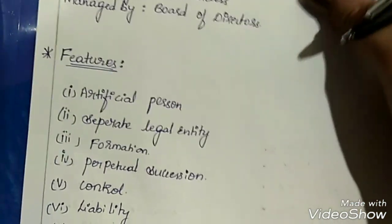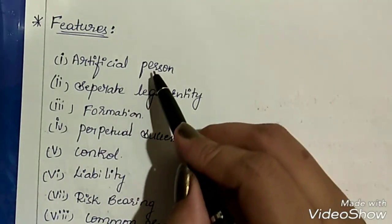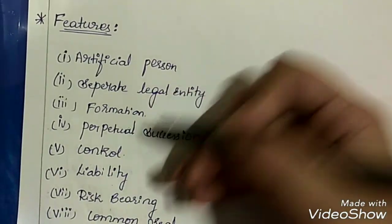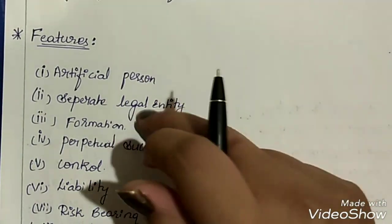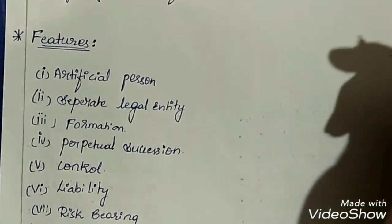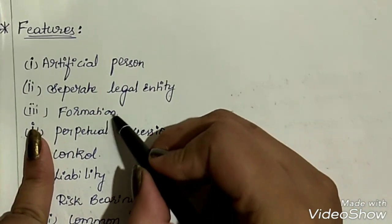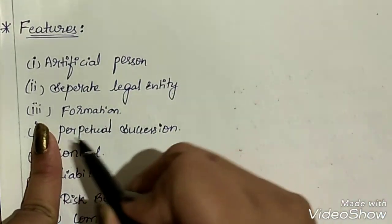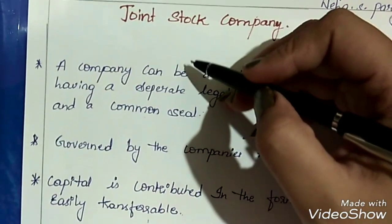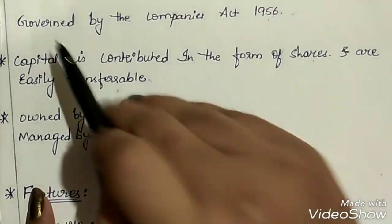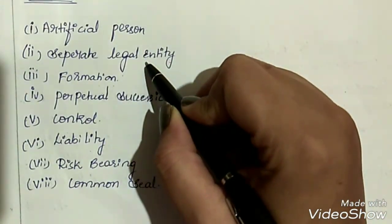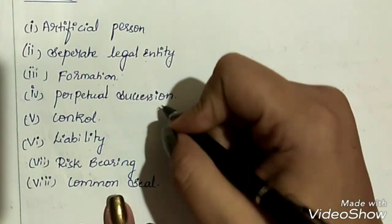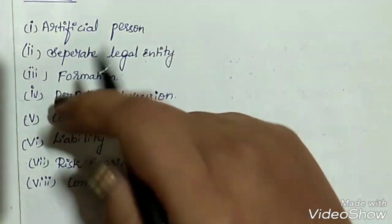Now let's discuss the features of a joint stock company. First is artificial person — because registration is compulsory, this organization is treated as an artificial person in the eyes of law. Second is separate legal entity — it is separate from its owners with its own legal existence and common seal. Third, its formation is more complex compared to other forms of business organization, and registration is compulsory. It is governed by the provisions of Companies Act 1956. Only after a certificate of registration is issued by the registrar can the company start its business activities.